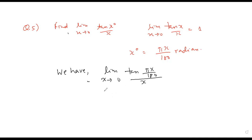Now, what we can do to use this theorem? We can multiply by pi over 180 in the numerator and as well as the denominator. So we can rewrite this limit x tends to 0, tan pi x over 180 divided by pi x over 180.